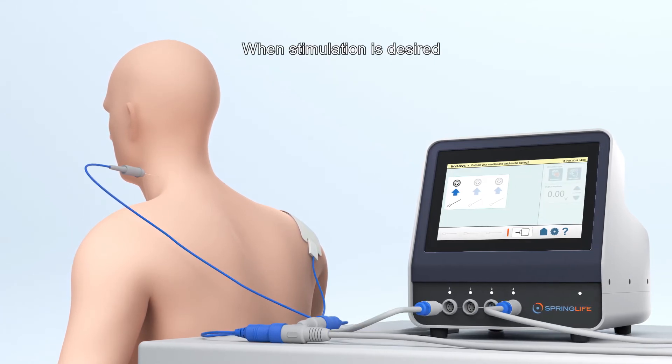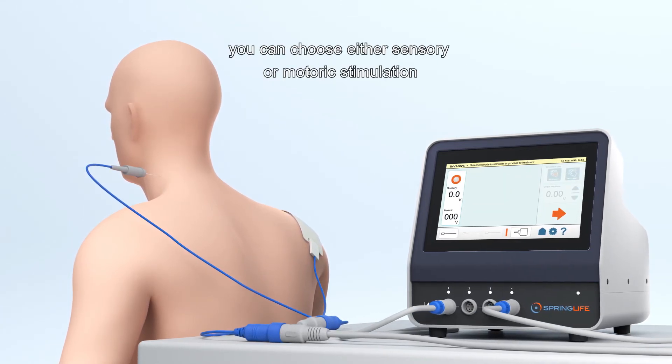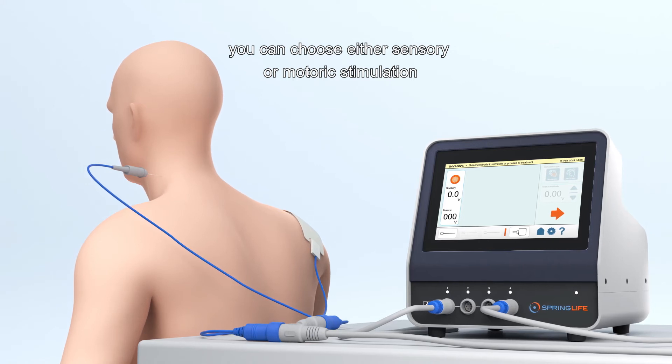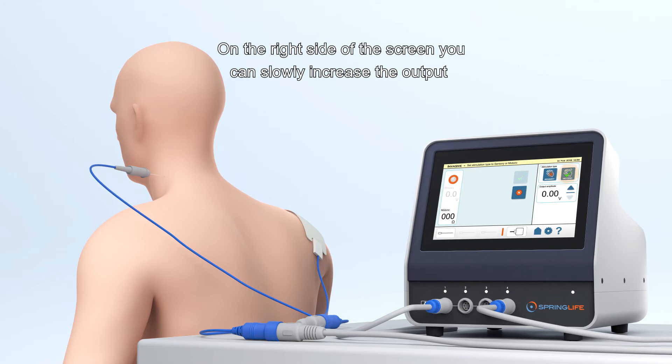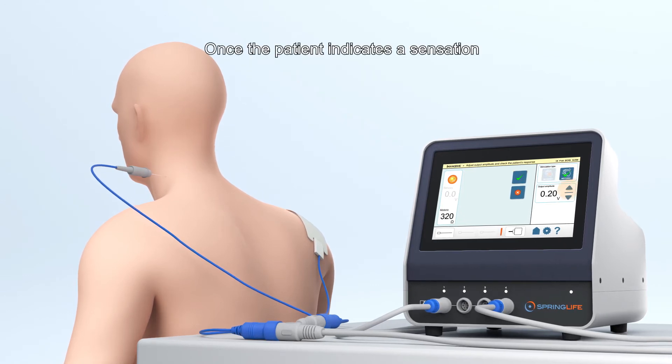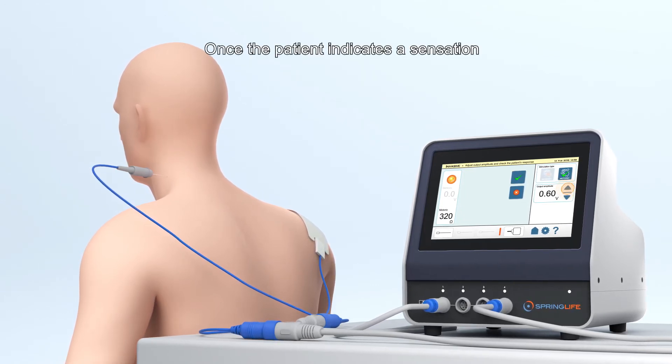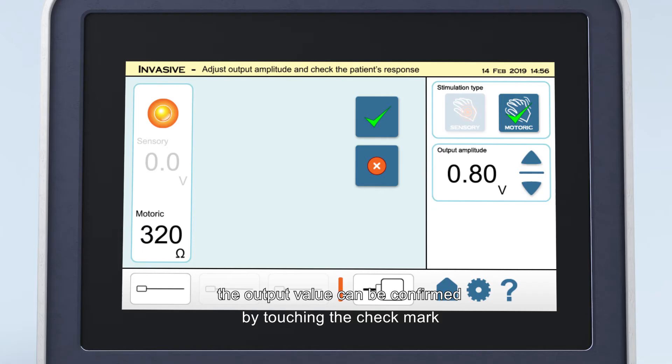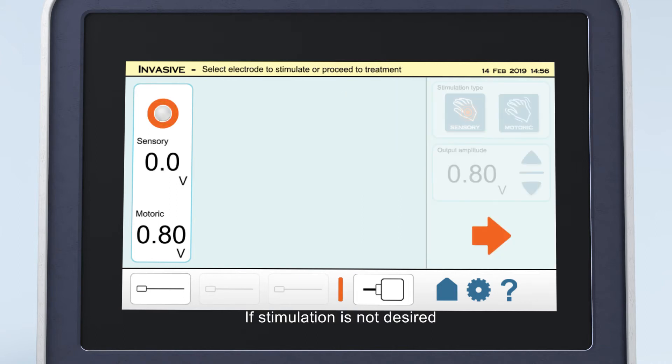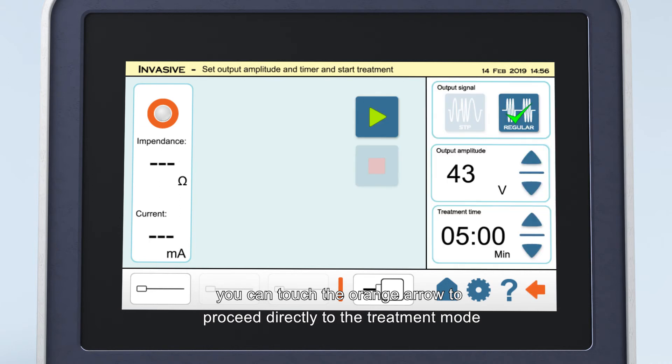When stimulation is desired, you can choose either sensory or motoric stimulation. On the right side of the screen, you can slowly increase the output. Once the patient indicates a sensation or a motoric reaction is noticed, the output value can be confirmed by touching the check mark. If stimulation is not desired, you can touch the orange arrow to proceed directly to the treatment mode.